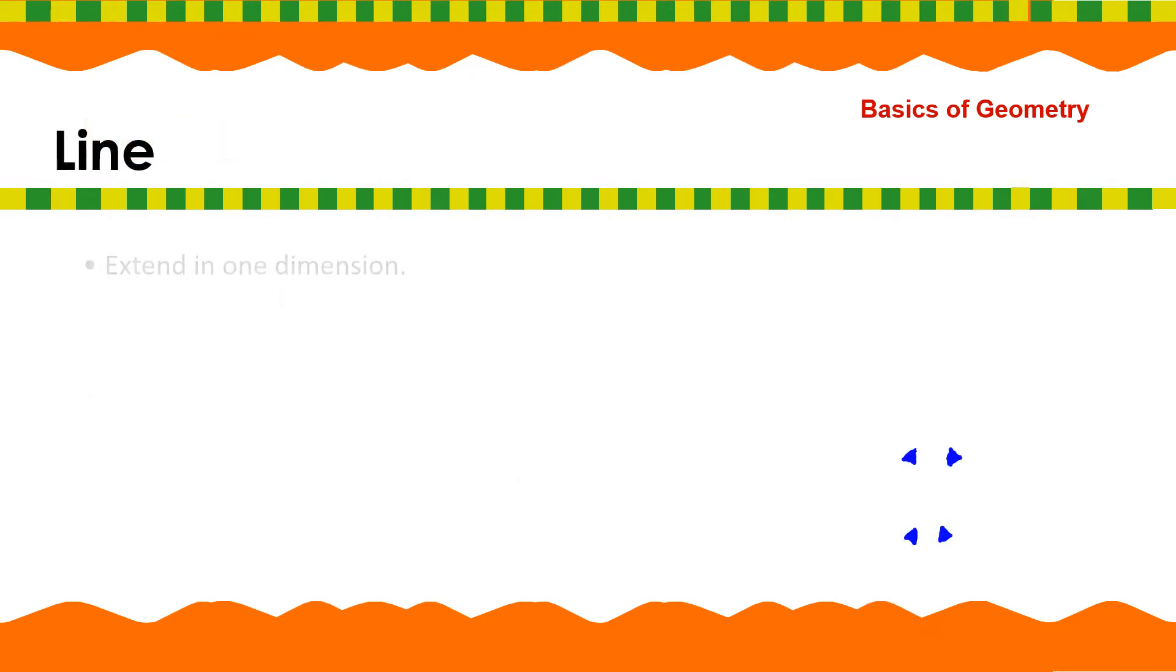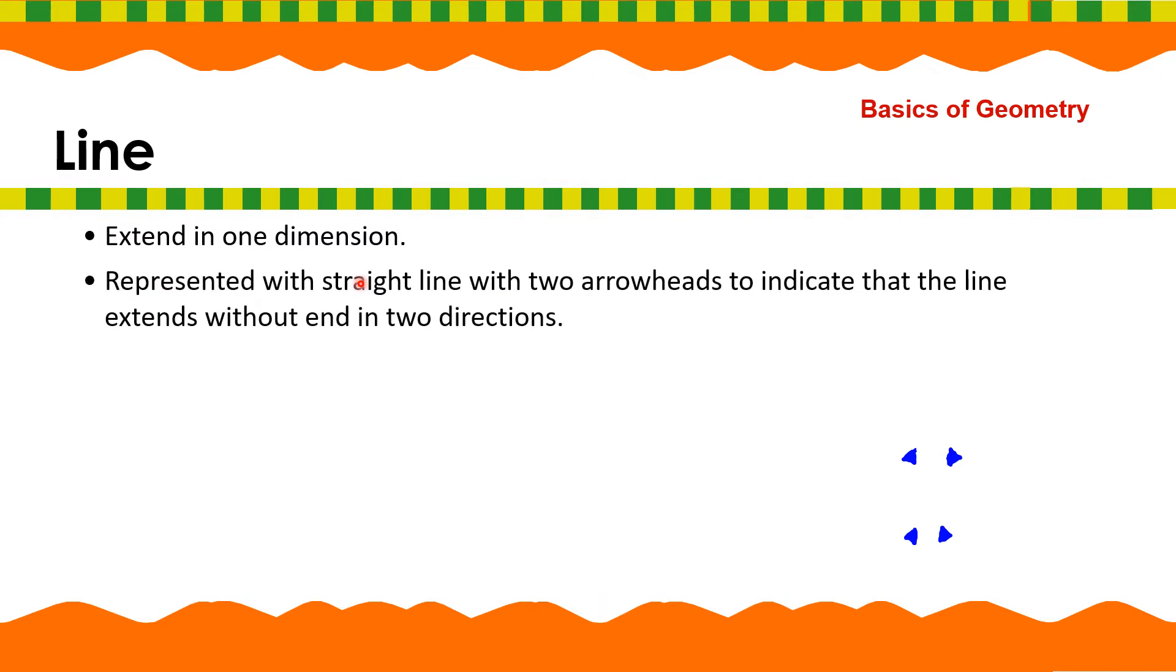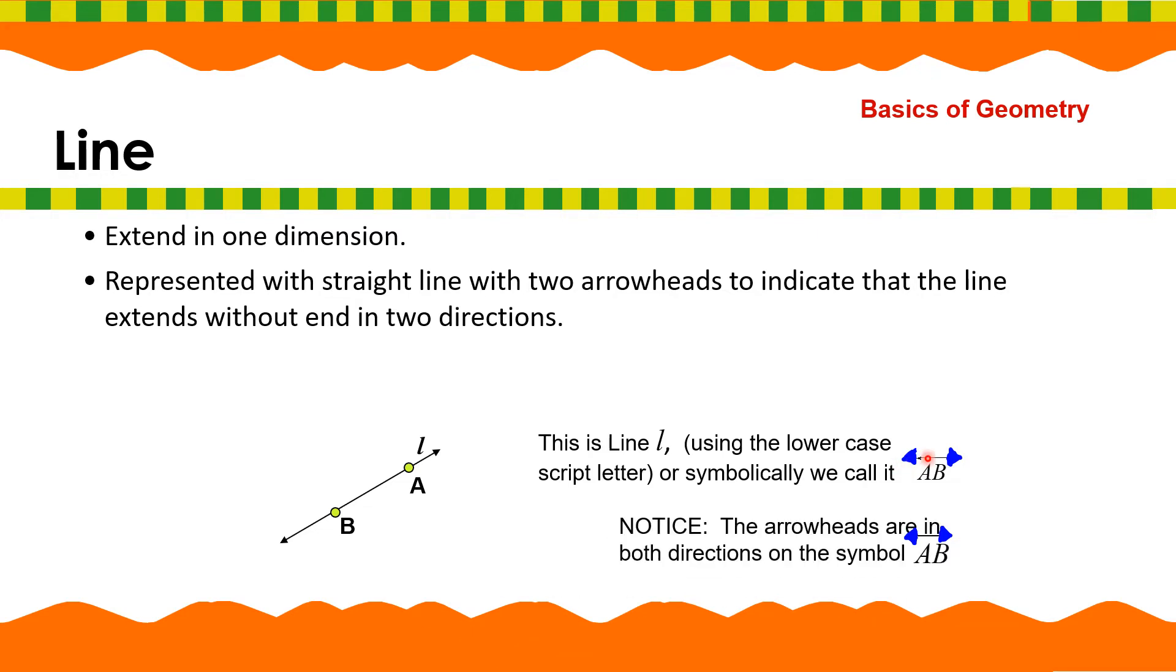Line. Line extends in one direction. Okay? It represents with straight line with two arrowheads to indicate that the line extends without end in two directions. So, wala siyang katapusan at two directions left or right. Okay. So, we have here line AB. Now, this is line L using the lowercase script letter or simply called line AB. Notice, the arrowheads are in both directions of the line AB. So, dalawa po ang arrowhead niya. It's connected to the reference.